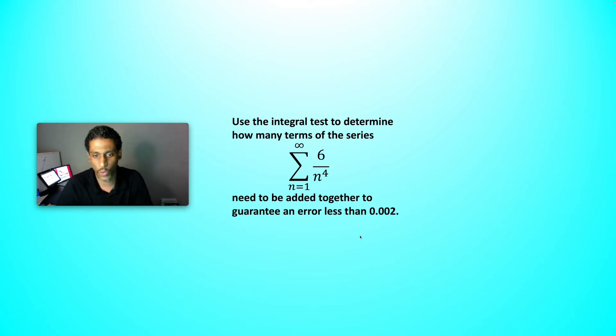Our series is 6 over n to the fourth starting at n equals 1, and we'd like the error to be less than 0.002. We want to be sure of that. How do we do it?